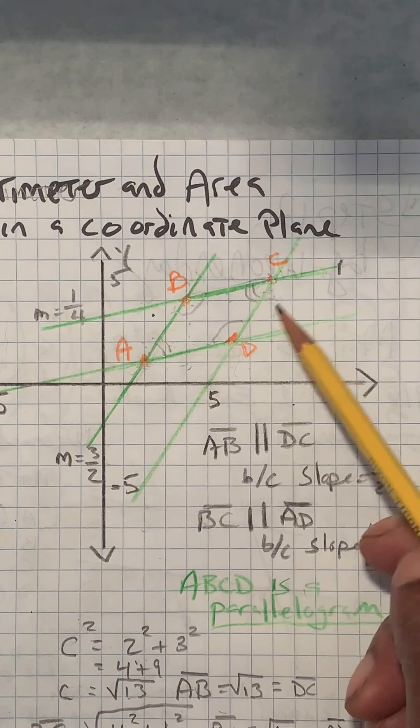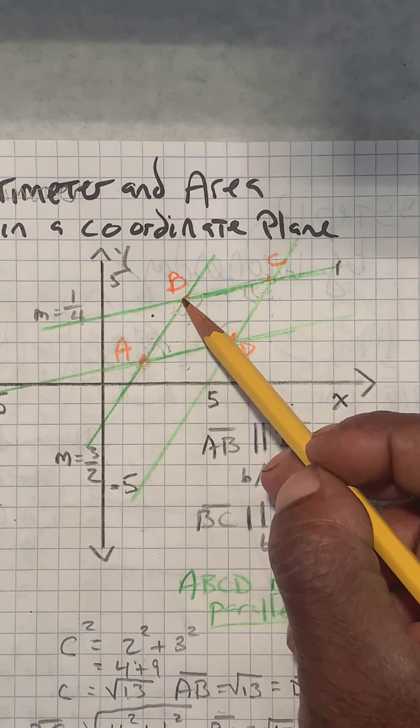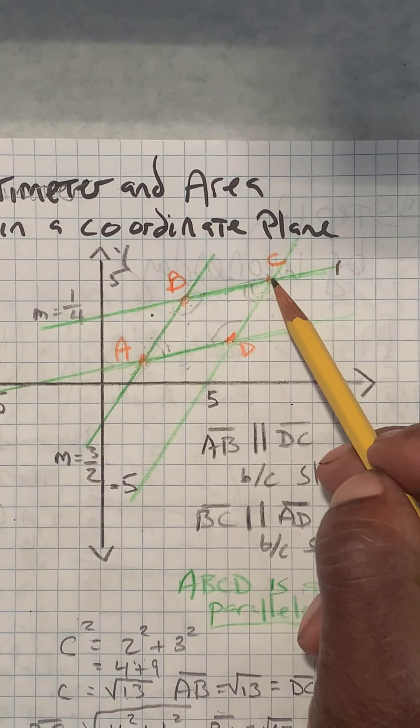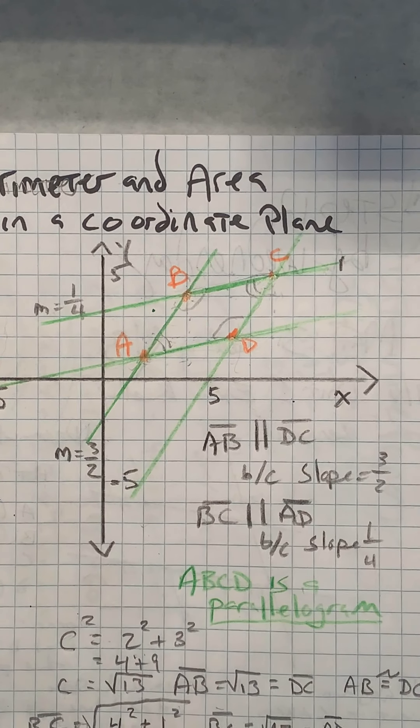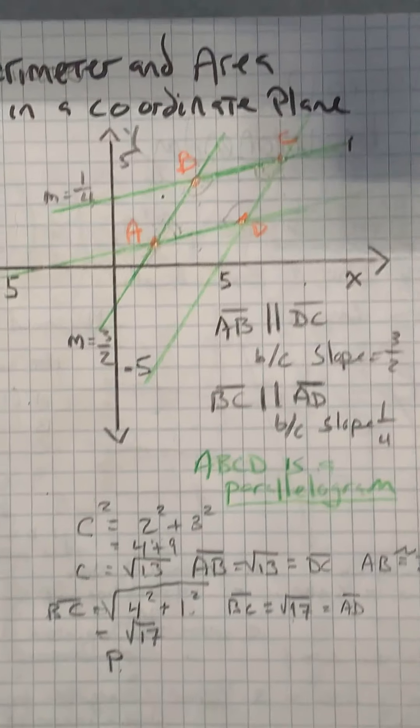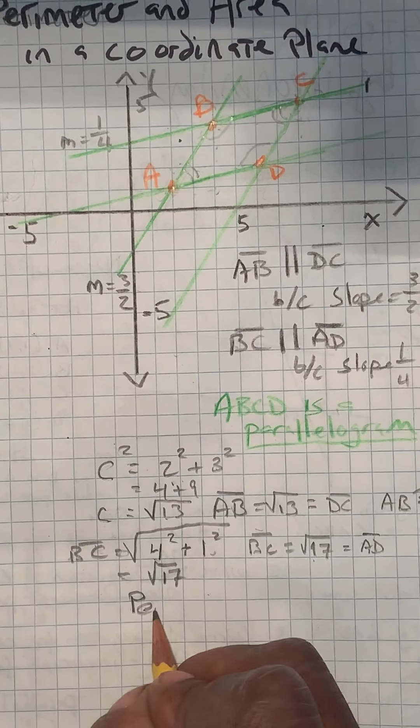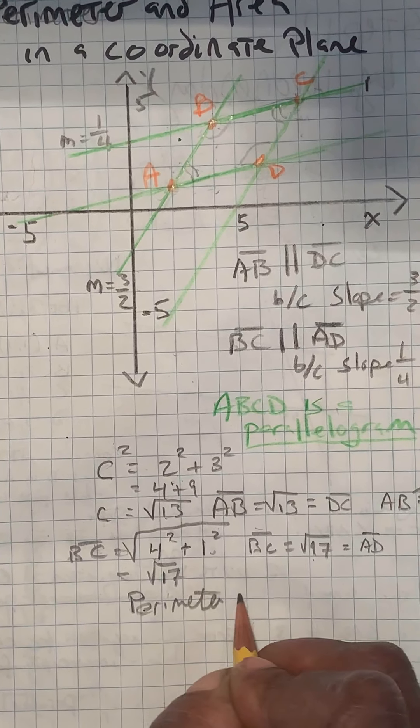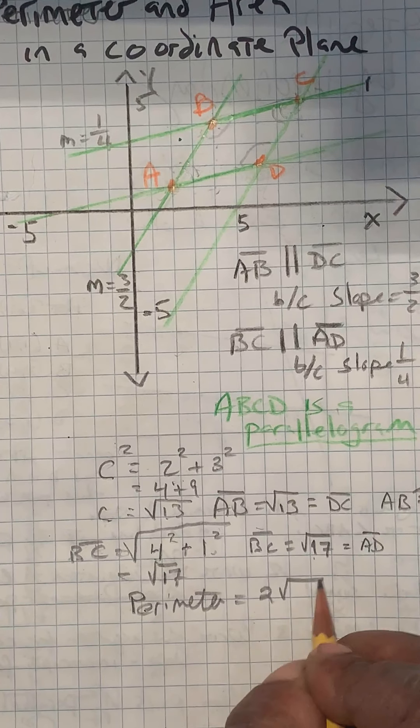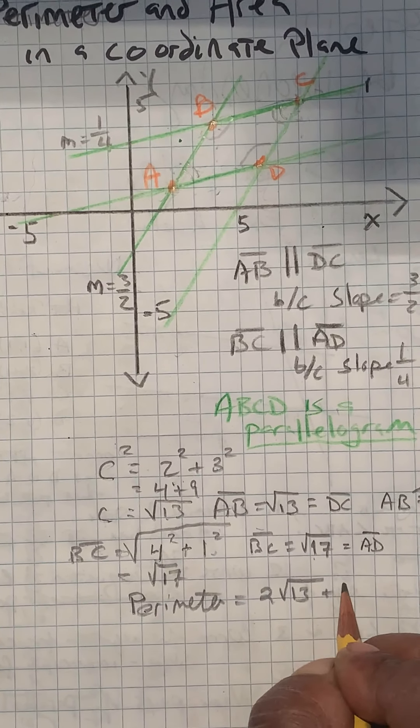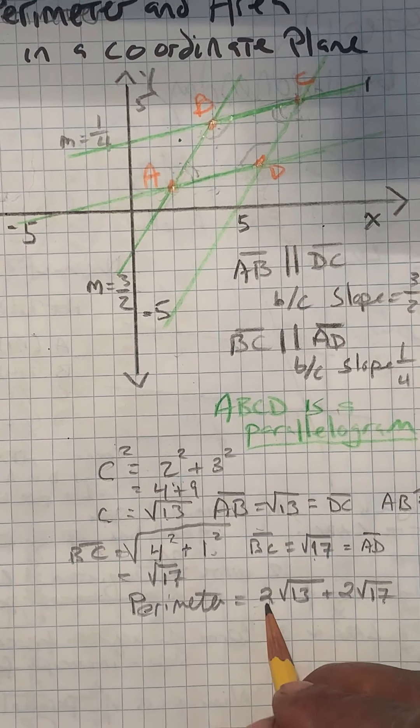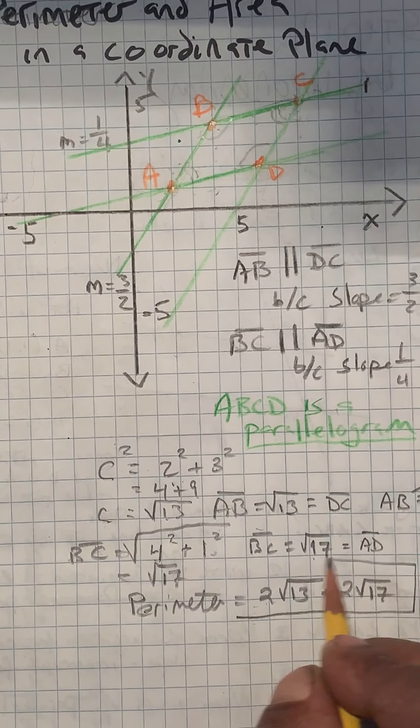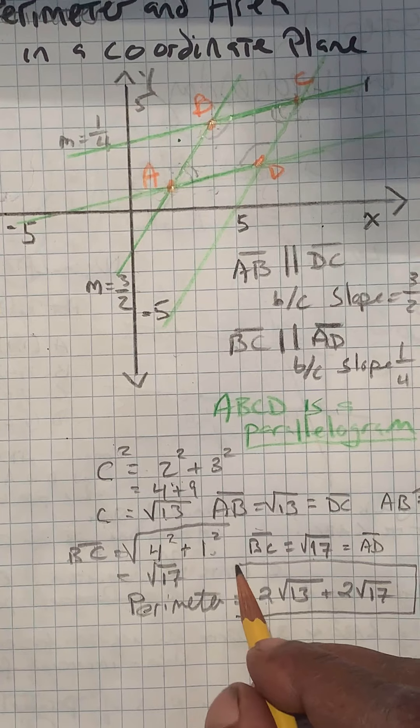Okay, now we can figure out what the perimeter is. Well, this was square root of 13, square root of 17, plus square root of 13, plus square root of 17. So the perimeter would equal 2 square root of 13 plus 2 square root of 17. And that would be a mathematically correct answer.